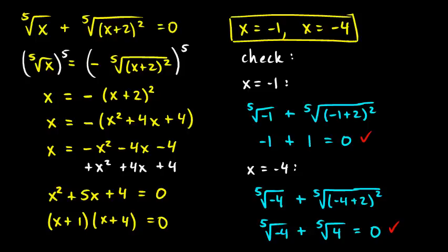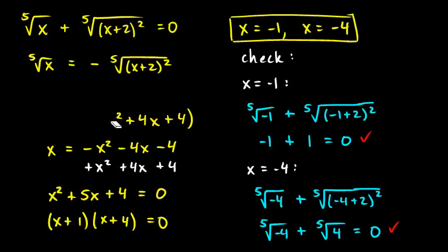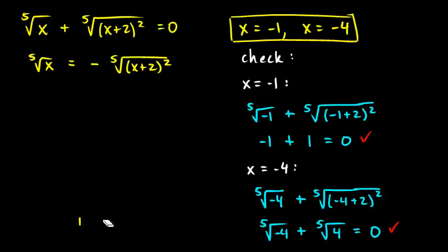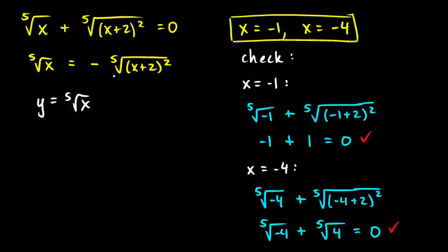Now I want to show you another way to look at this — we can approach it graphically. I'll look at the equation in the form where the fifth root of x equals the negative fifth root of x plus 2 squared. I'll think of these as two functions: y1 equals the fifth root of x, and y2 equals the negative fifth root of x plus 2 squared.